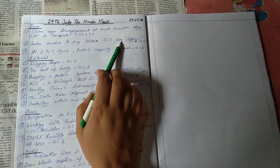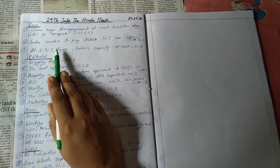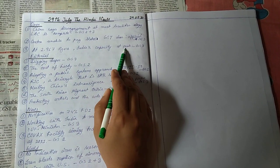Centre unable to pay states GST dues, official GS paper 3. At 2967, Tigers, India's capacity at peak, GS paper 3.